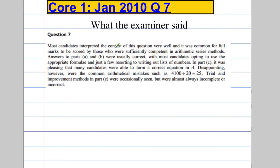But, let's go on and have a look at what the examiner had to say. Most candidates interpret it correctly. Full marks were scored by lots of students. But look, full marks were scored by those who were sufficiently competent in arithmetic series. And you'll find that some people actually make common arithmetical mistakes such as this. So, we've got to be really, really careful. It's a non-calculator paper. Don't be making those silly mistakes.